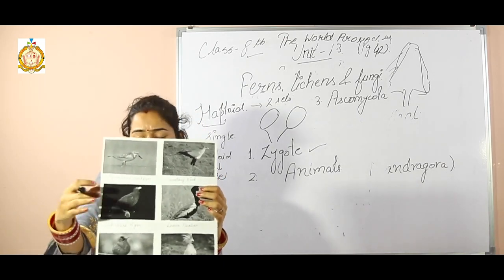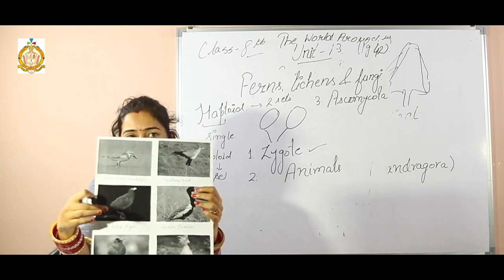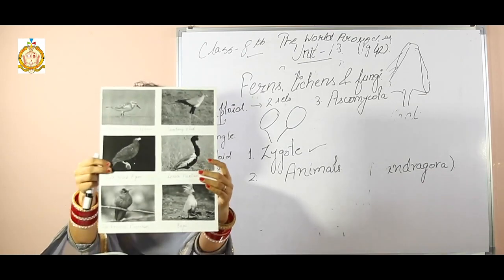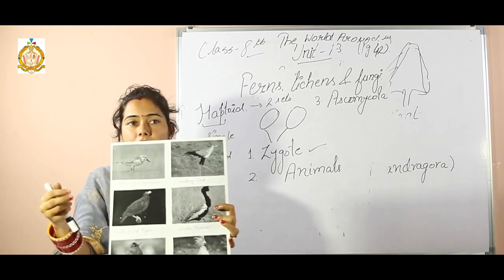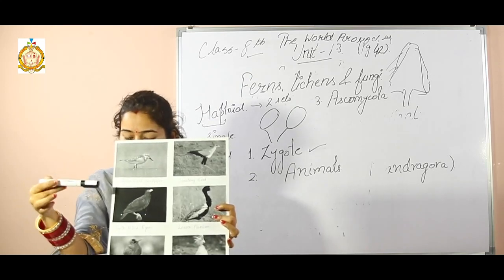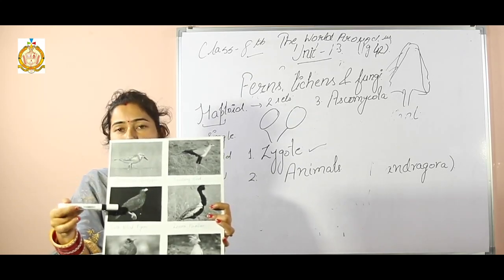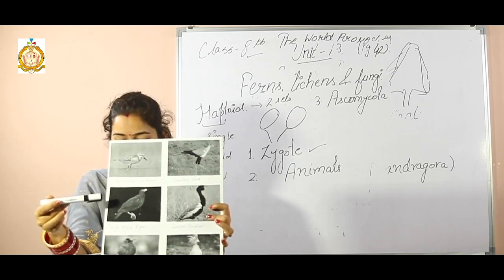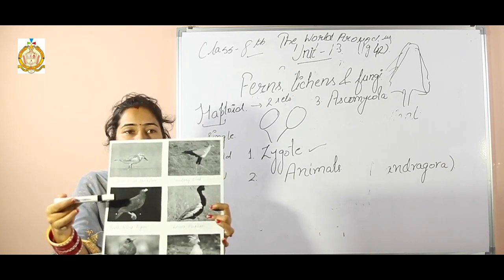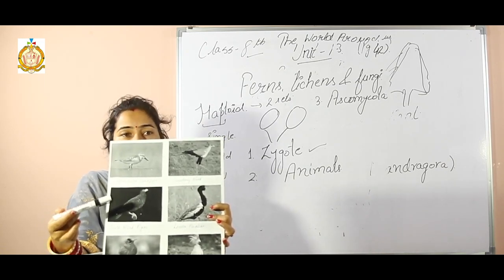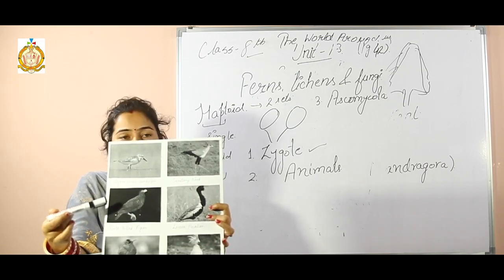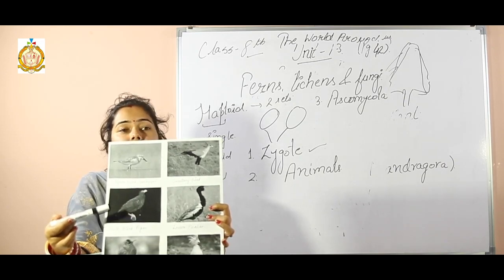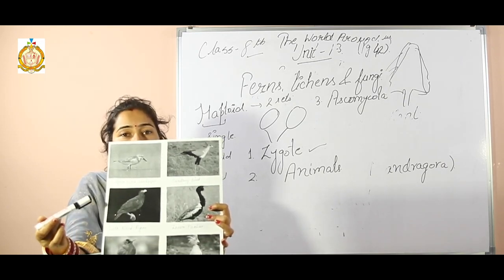The third one is the tooth-billed pigeon, also known as little dodo. This bird is found only on the island of Samoa. With fewer than 250 adults estimated to survive, urgent action is needed to save the species from the same fate as its infamous relative, the extinct dodo.